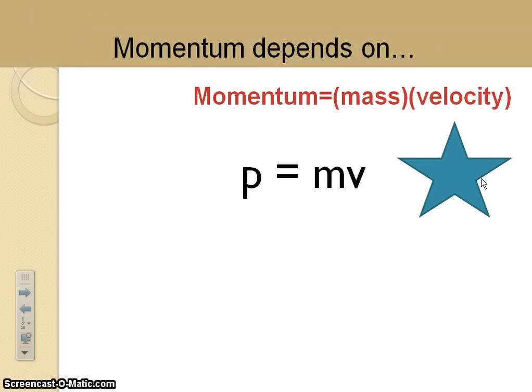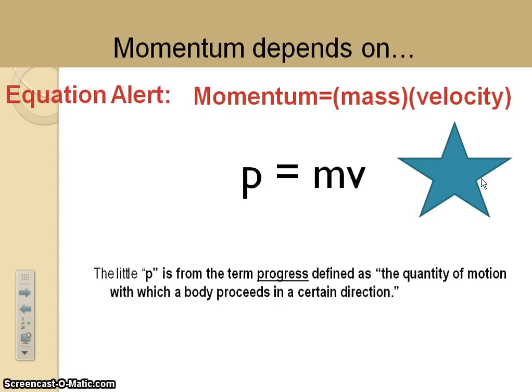So momentum depends on mass and velocity. Go ahead and write that down in your equation box. The little p is a term for progress, the quantity of motion which a body proceeds in a certain direction. I think it sometimes doesn't make a lot of sense to people that momentum is symbolized with p, but we can't really call it m, because that stands for mass. So we'll call it p for progress.